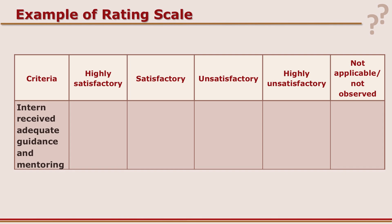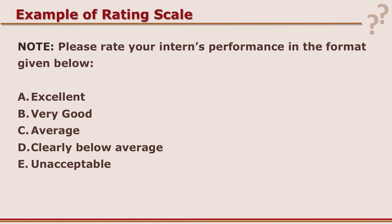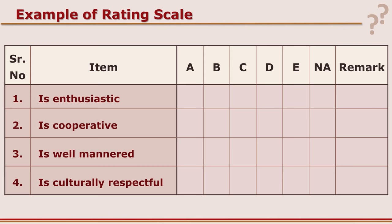A 5 point scale example about internship evaluation asks whether the intern received adequate guidance and mentoring, rated on: highly satisfactory, satisfactory, unsatisfactory and highly unsatisfactory. There is also a 'not applicable or not observed' category. Another example with 5 categories — excellent, very good, average, clearly below average and unacceptable — can be used to rate items such as: the intern is enthusiastic, is cooperative, is well mannered, is culturally respectful. There can also be a column for remarks.